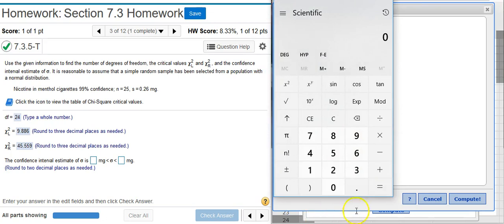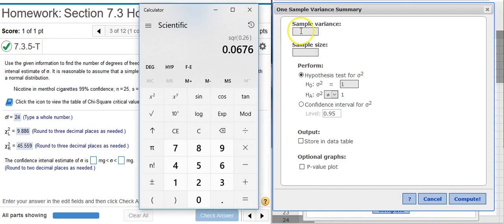So if I take out my calculator here, I put in that sample standard deviation and I square it. That gives me the sample variance. So now I can put that number here in this field in my options window.